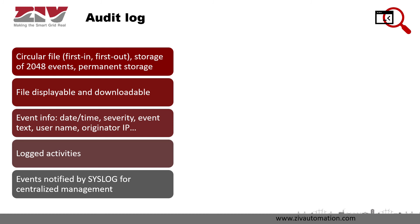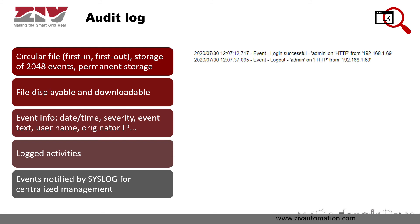There's no way to remove the audit log. This file is displayed on the web page of the IED and can be downloaded through the web page, file transfer, or IEC 61850. Each event includes information like the date and time of occurrence, the severity, whether it's an event or an alarm, the event text description, the username, the originator IP address, etc. Here's an example of a successful login and logout of the user admin over HTTP from a given IP address.